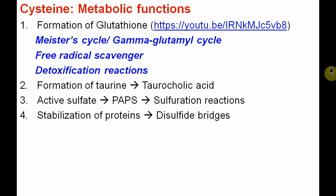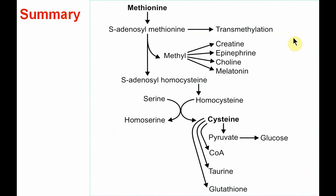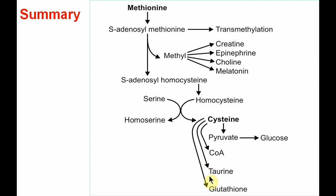In summary, methionine and cysteine are sulfur-containing amino acids. Methionine after activation to S-adenosyl methionine undergoes various transmethylation reactions to form important compounds, then is converted to S-adenosyl homocysteine, which with serine synthesizes cysteine. Cysteine helps synthesize pyruvate for glucose formation — making it glucogenic — and also helps synthesize coenzyme A, taurine, and glutathione.